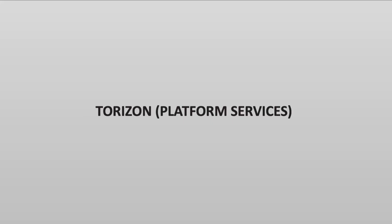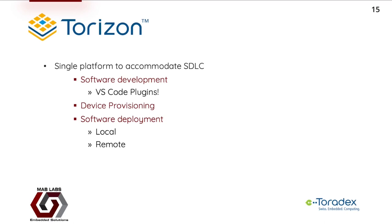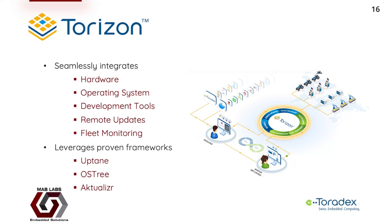Now let's talk about Torizon and Torizon Platform Services, which are complete Edge and IoT ecosystems offered by Toradex. Torizon is a complete ecosystem to help organizations manage every aspect of their IoT and Edge devices, ranging from the hardware to the OS to the backend and cloud. Torizon has features that help organizations manage every stage of the software development lifecycle. At the development stage, Torizon offers plugins for VS Code. Torizon also offers device provisioning and software deployment — whether local for developers and test teams to quickly deploy to test units, or remote to allow deployment teams to push updates to devices in the field. Torizon leverages proven open-source frameworks such as Uptane, OSTree, and Aktualizr.